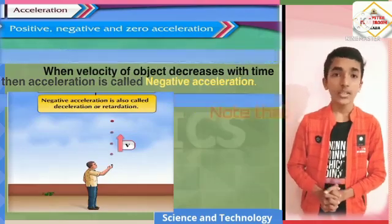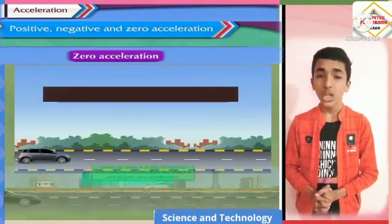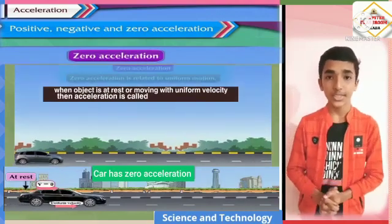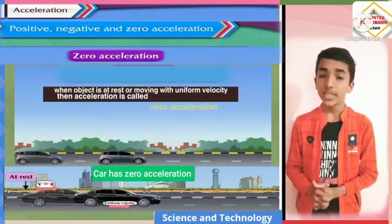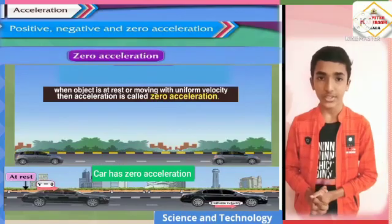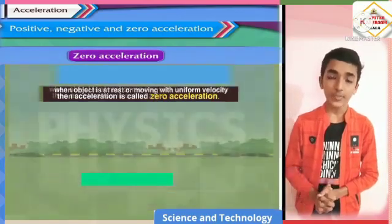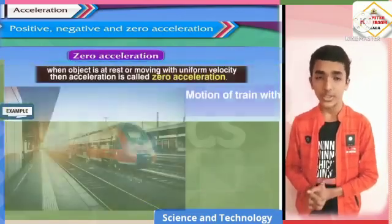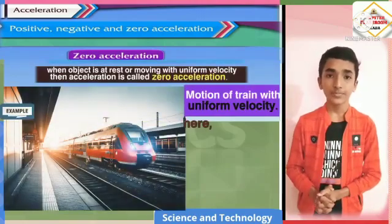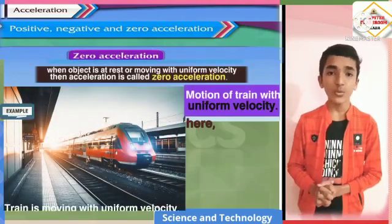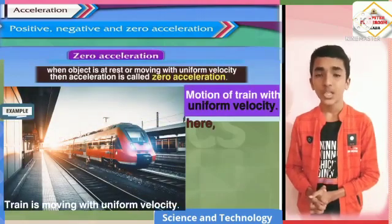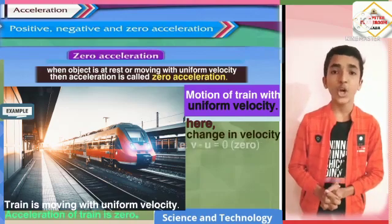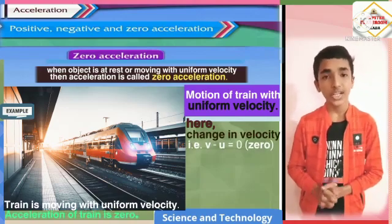Then, zero acceleration: when an object is at rest or moving with uniform velocity, then acceleration is called as zero acceleration. For example, motion of a train with uniform velocity. Here, the train is moving with uniform velocity, so its acceleration will be zero because the change in velocity of the train is also zero.